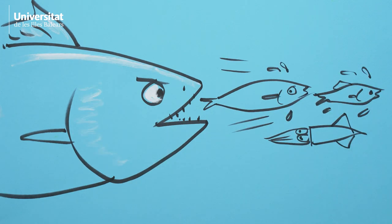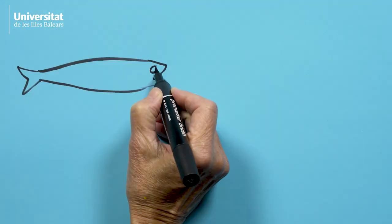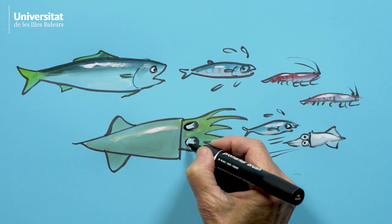Let's start with the top predators. We all know that the big fish eats the little fish. The little fish eat other smaller fish, crustaceans, and cephalopods.